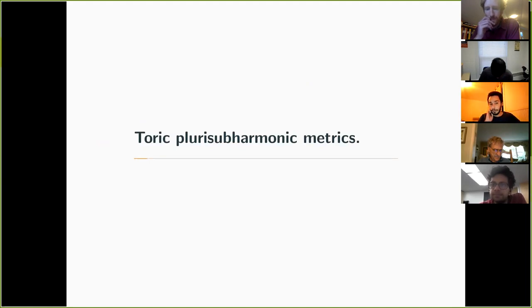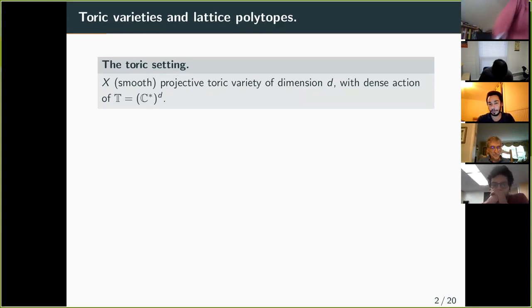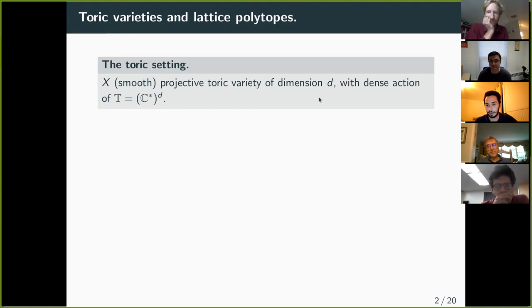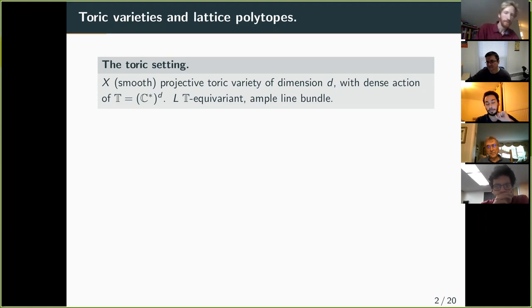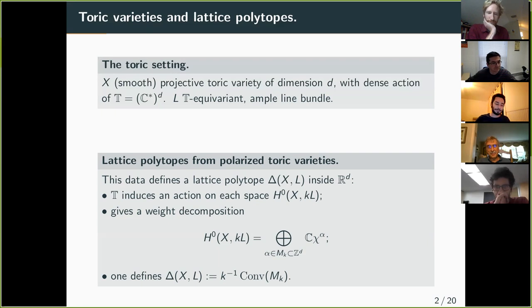I'll begin with some notions of toric geometry, and in particular toric potential theory. The setting is: we take X, a smooth projective variety which we ask to be toric, meaning there is a dense open action of a torus C* to the power of D, where D is the dimension of the variety — so it is a maximal rank torus. I'll pick L to be a toric equivariant ample line bundle on X. The first thing I'm going to discuss is the correspondence between lattice polytopes (polytopes with integral vertices) and polarized toric varieties.